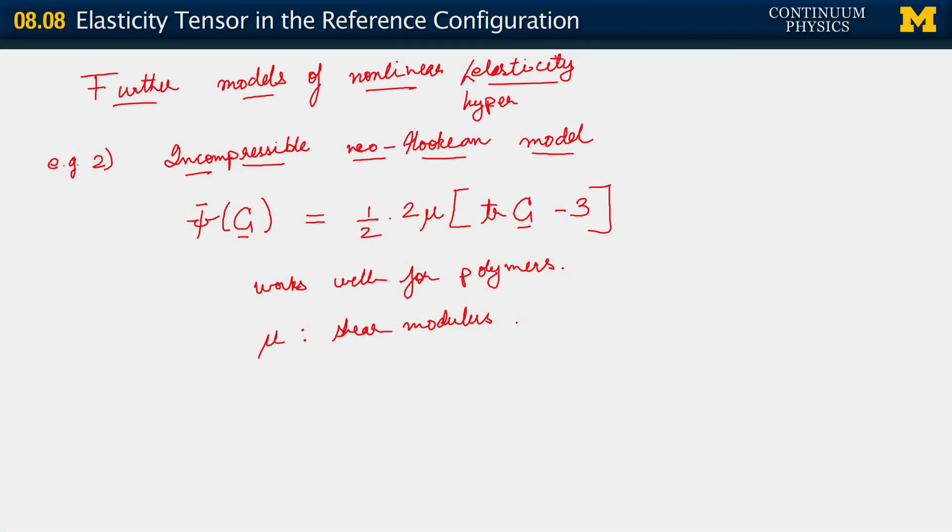In the case of polymer mechanics, mu can be related to the underlying structure of long chain molecules and so on. So that development can also be carried out. We are not going to get into it here. So this is the incompressible Neohookian. It can be extended to a compressible form.